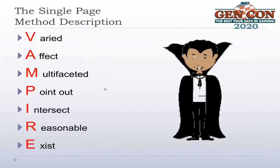We use an acronym to describe the methodology, and that acronym is VAMPIRE. You want Varied characters. You want things that Affect your players or main protagonists. You'd like those NPCs to be Multifaceted. If possible, you'd like them to Point out what's special about your world. They ought to Intersect with your main characters. What they do ought to be Reasonable. And they need to Exist outside of the existence of your protagonists. We'll give examples of all of these things.